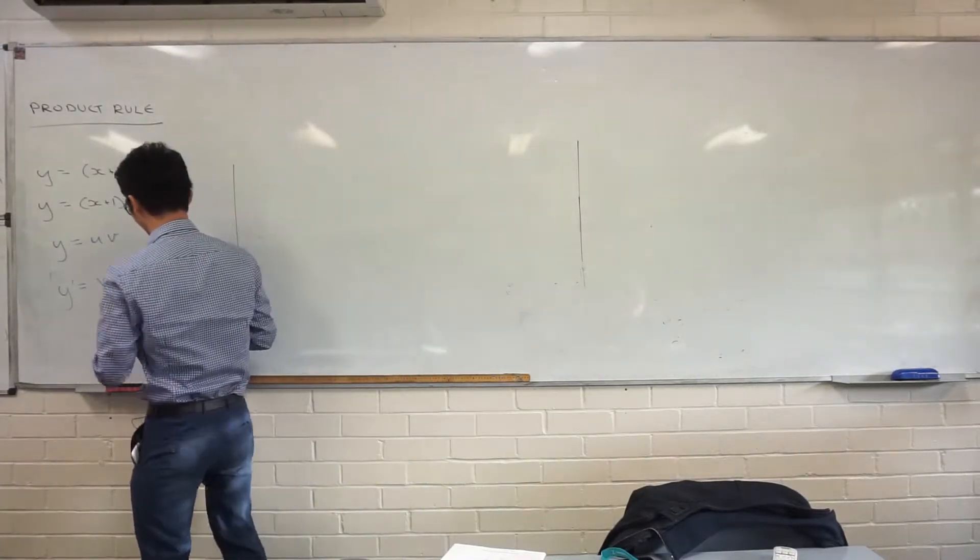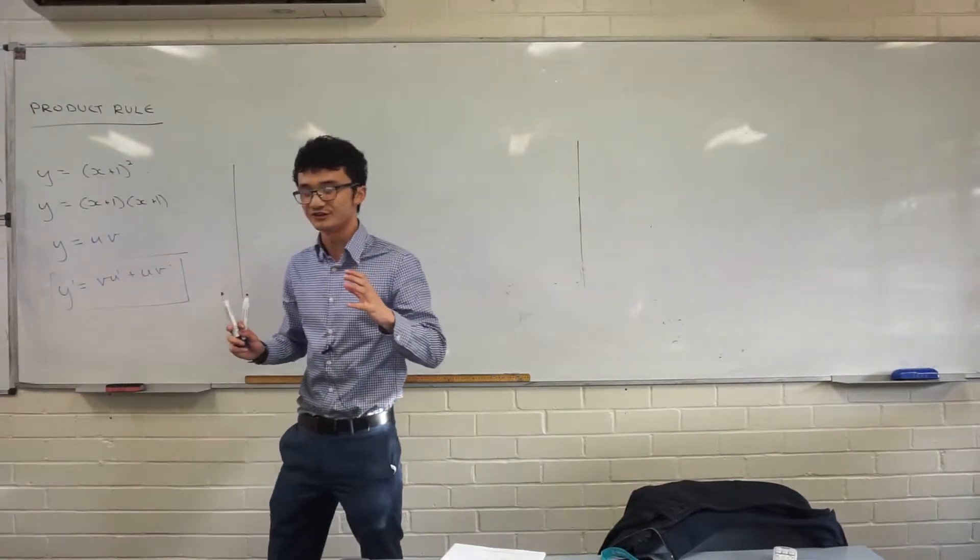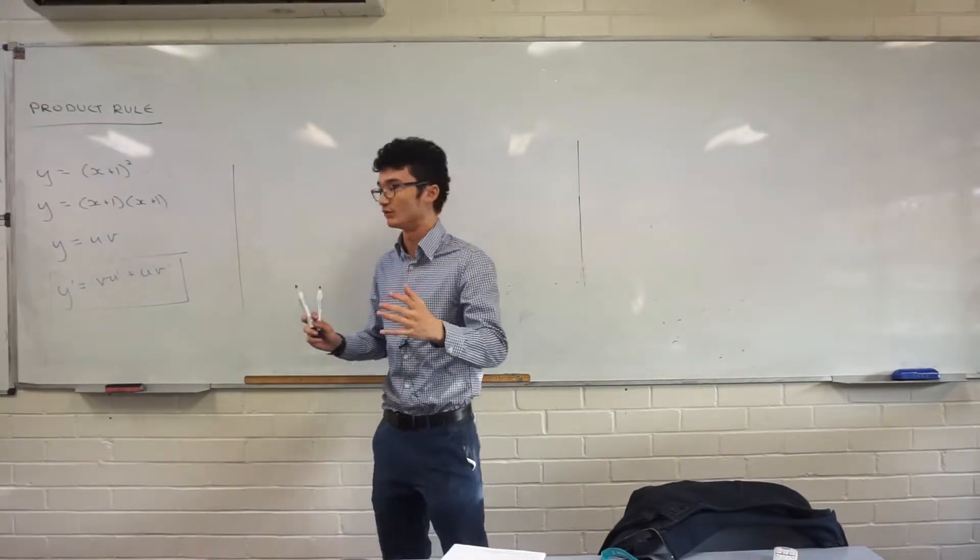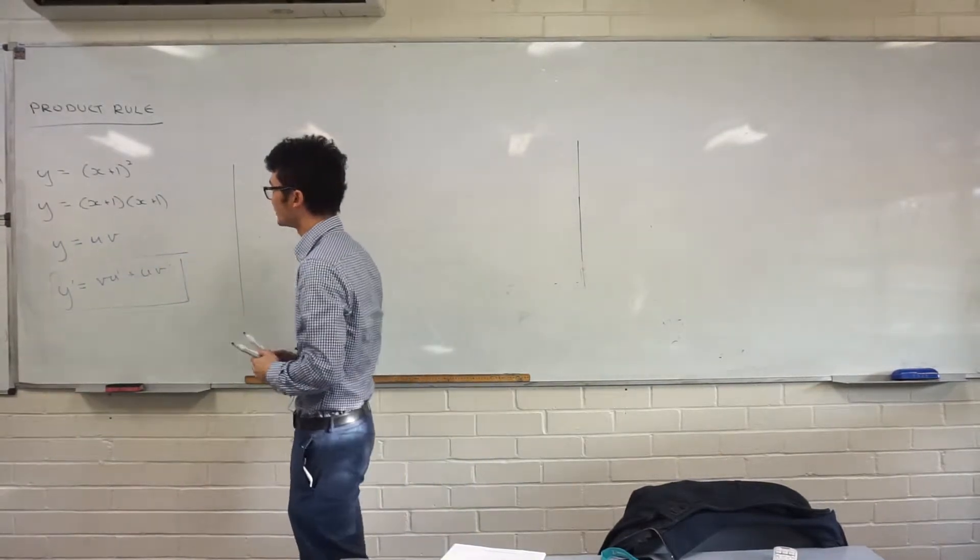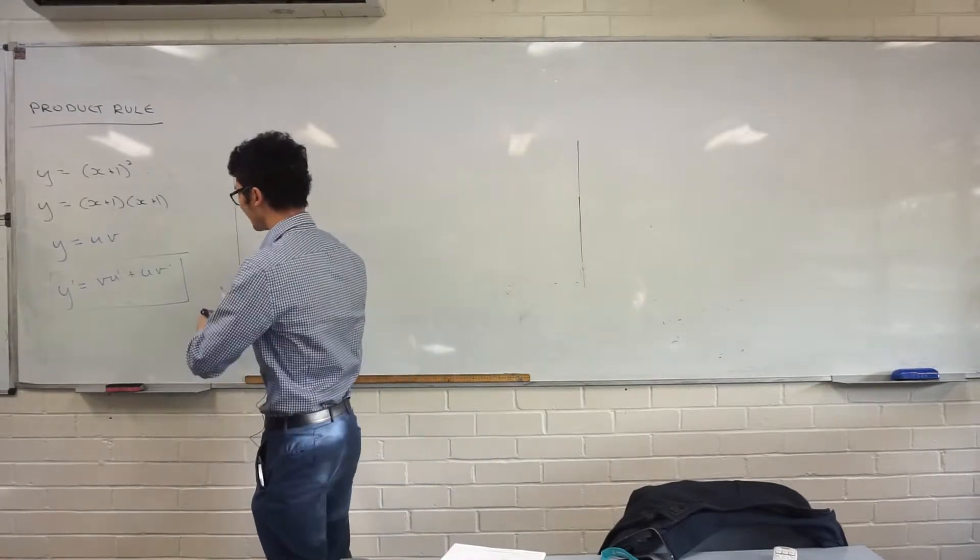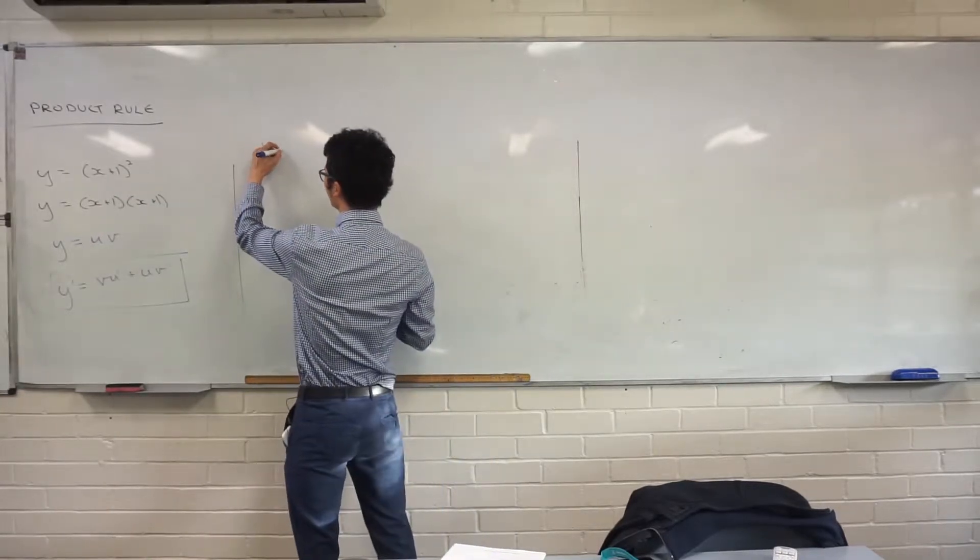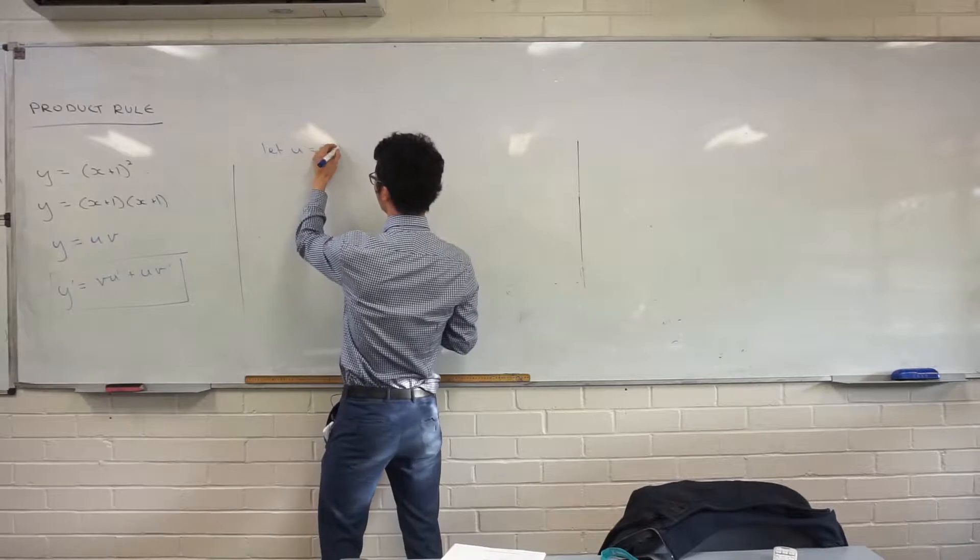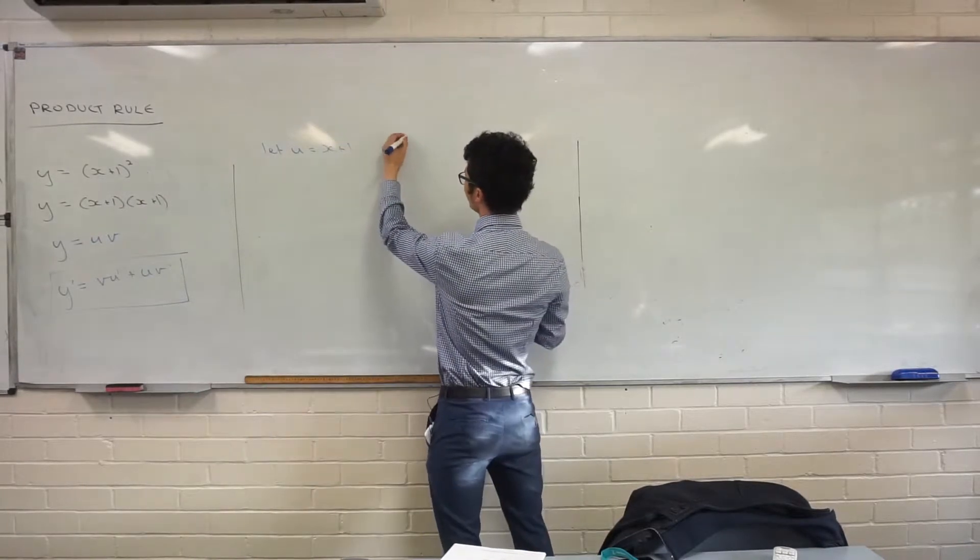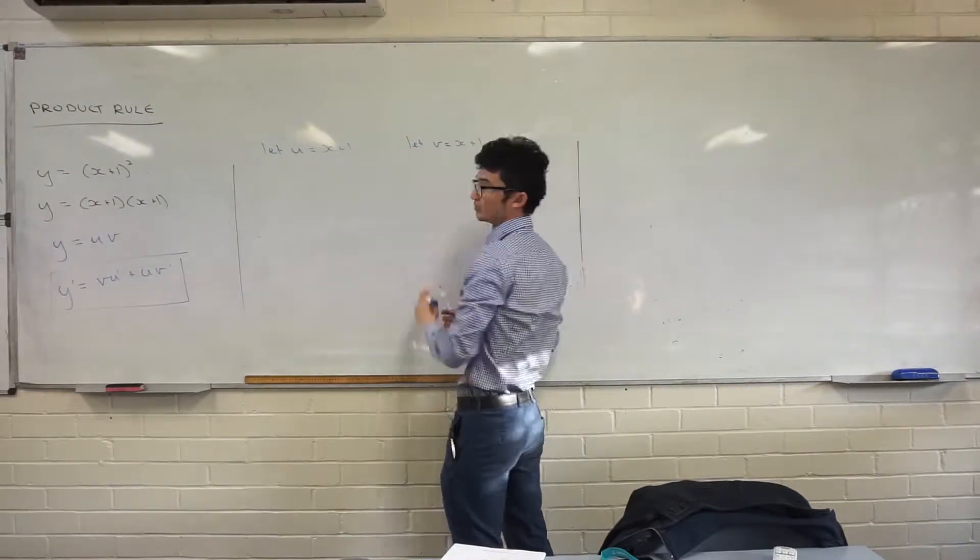So what does it mean when I have vu dash plus uv dash? Well, we actually need to lay out our solutions in a particular way. Here's our function: y equals x plus 1, x plus 1. So I say, we're introducing new variables. So anytime I do that, I have to say we let u equal to one of our functions. In this case, one of them is x plus 1. And we also let v equal to the other one, so x plus 1 there.